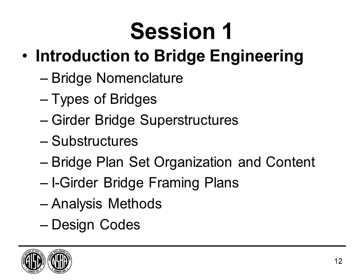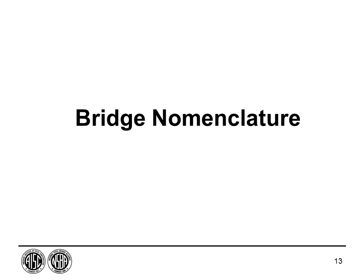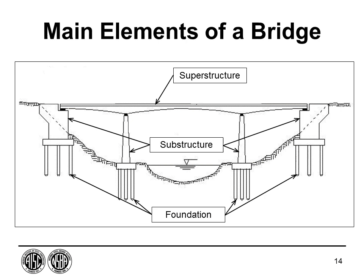The first topic tonight is bridge terminology or nomenclature, generally accepted as industry standard, though it can vary widely from state to state or agency to agency. There are three main elements of a bridge: the superstructure, the substructure, and the foundation. Before covering superstructure components, let's test familiarity with basic superstructure terminology.